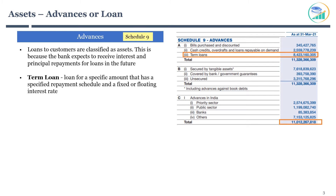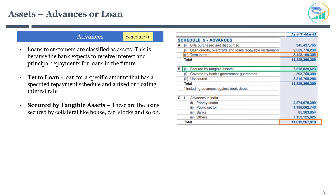The next line item is loans secured by tangible assets. These are loans secured by collateral, which could be tangible assets like a house, car, or stocks. They often have lower interest rates than unsecured loans. It's good to see a large percentage of loans classified under secured by tangible assets, because in the case of failure to repay, the bank can seize the assets used as collateral. HDFC Bank has a good percentage of loans secured by tangible assets.